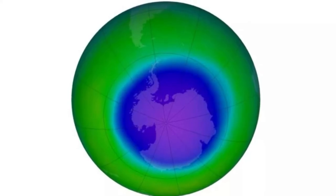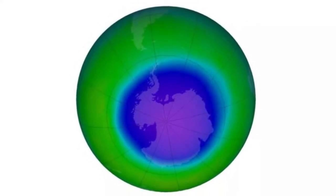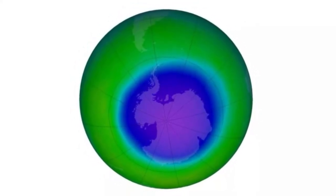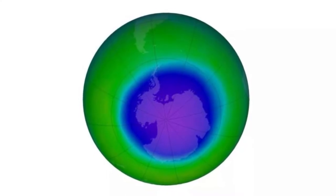Ozone is a molecule made up of three oxygen atoms, often referenced as O3. Ozone is formed when heat and sunlight cause chemical reactions between oxides of nitrogen, NOx, and volatile organic compounds, VOCs, which are also known as hydrocarbons.